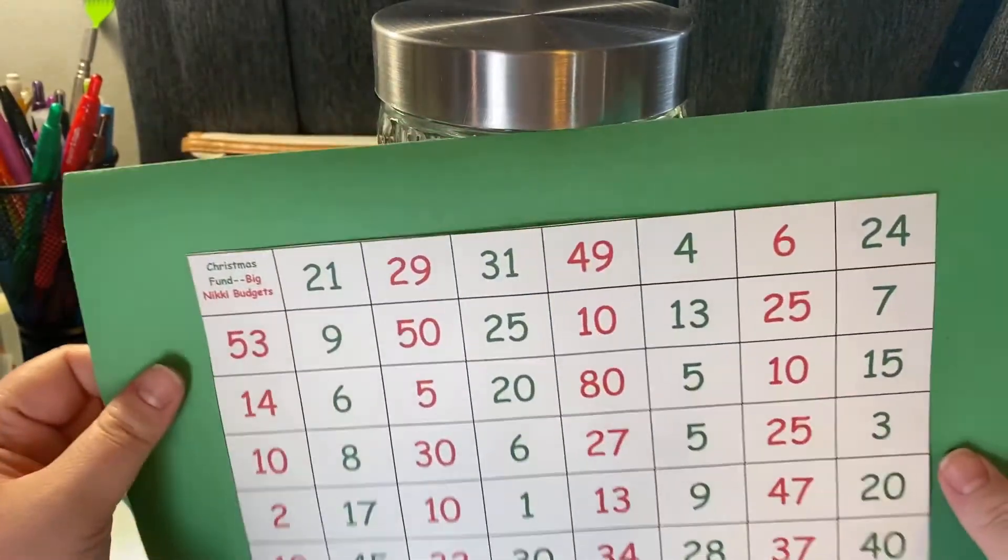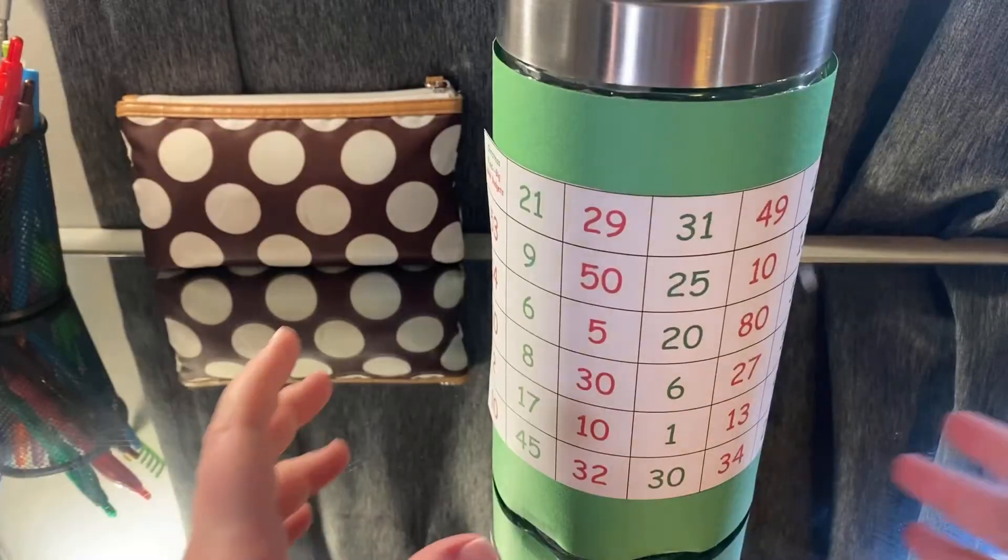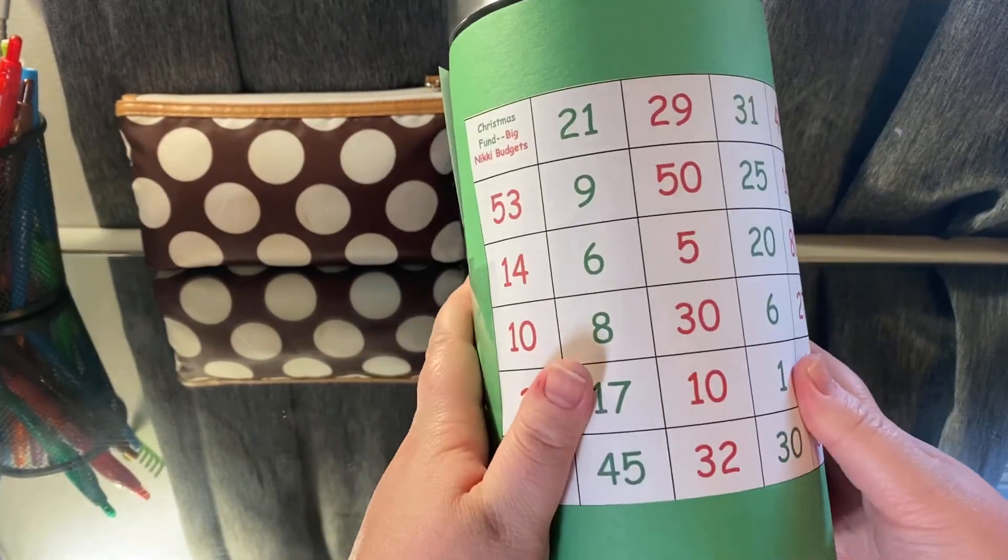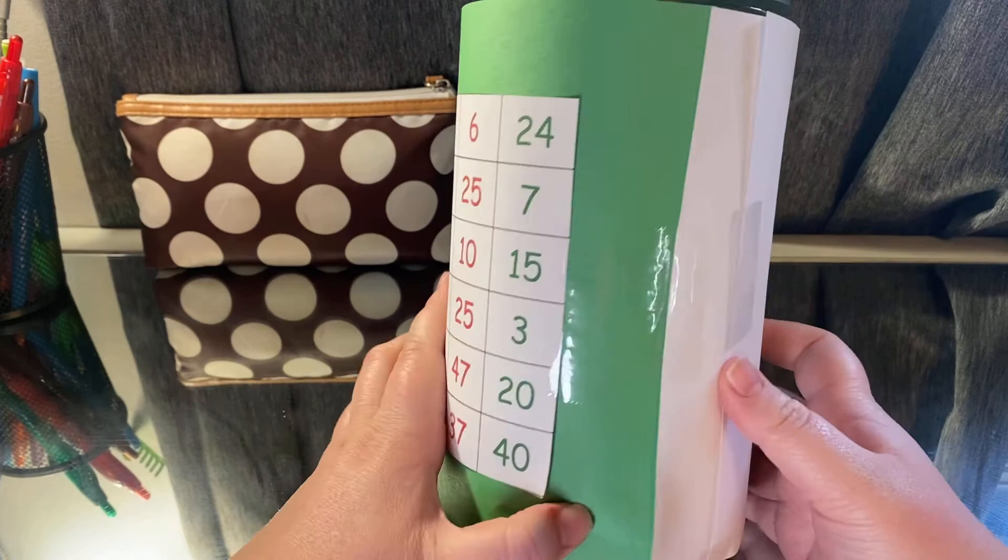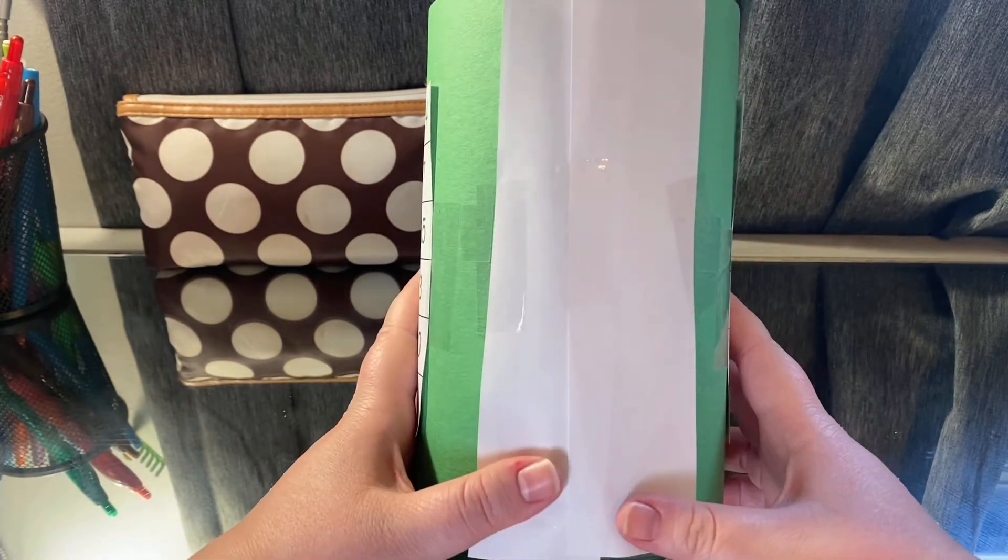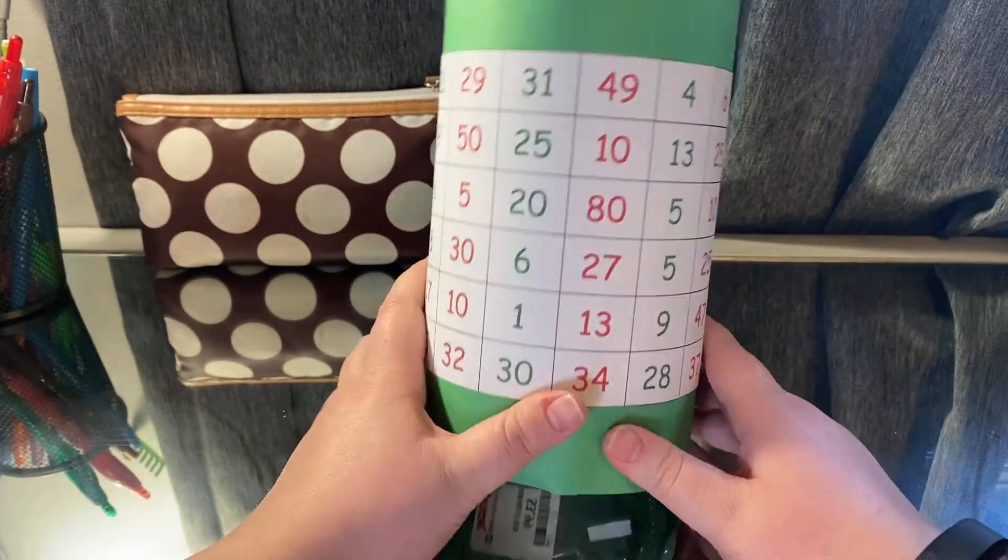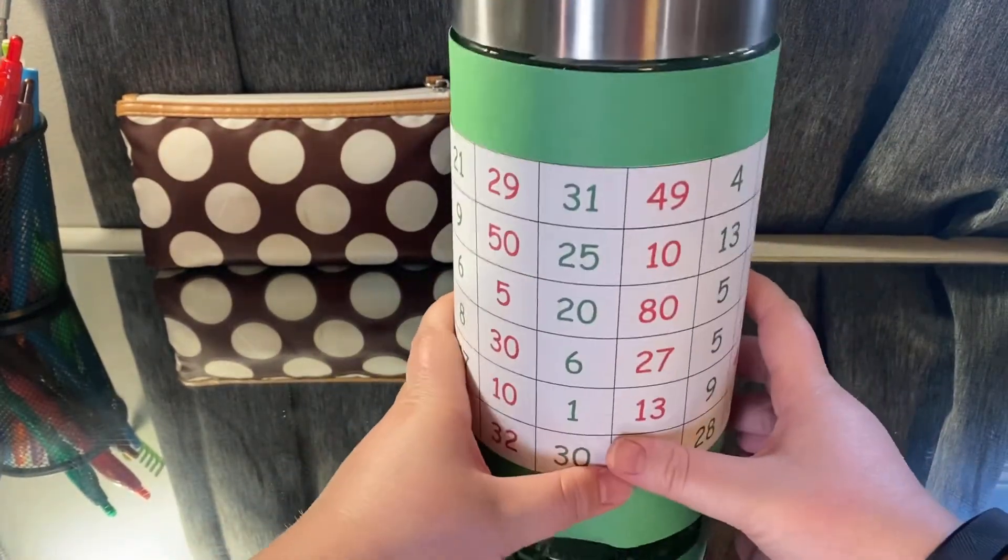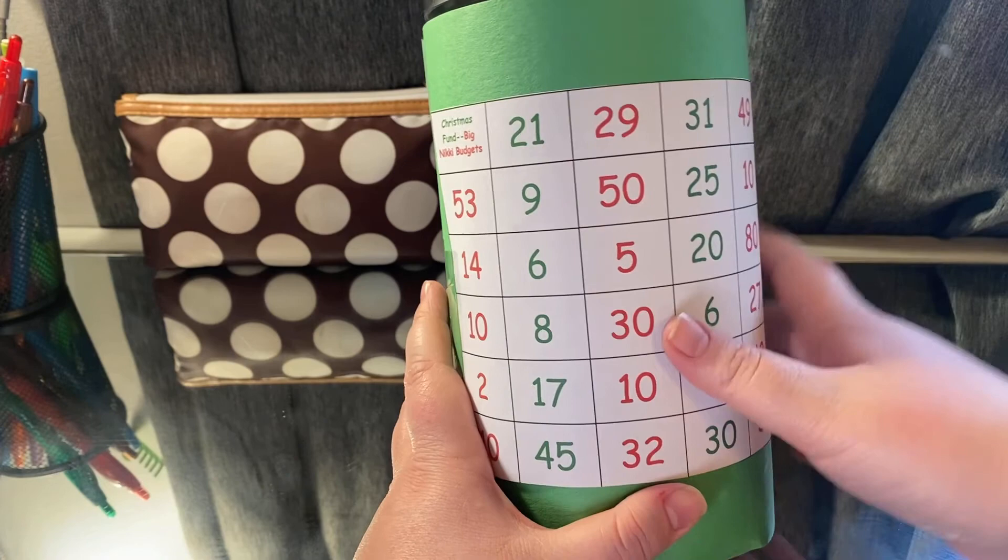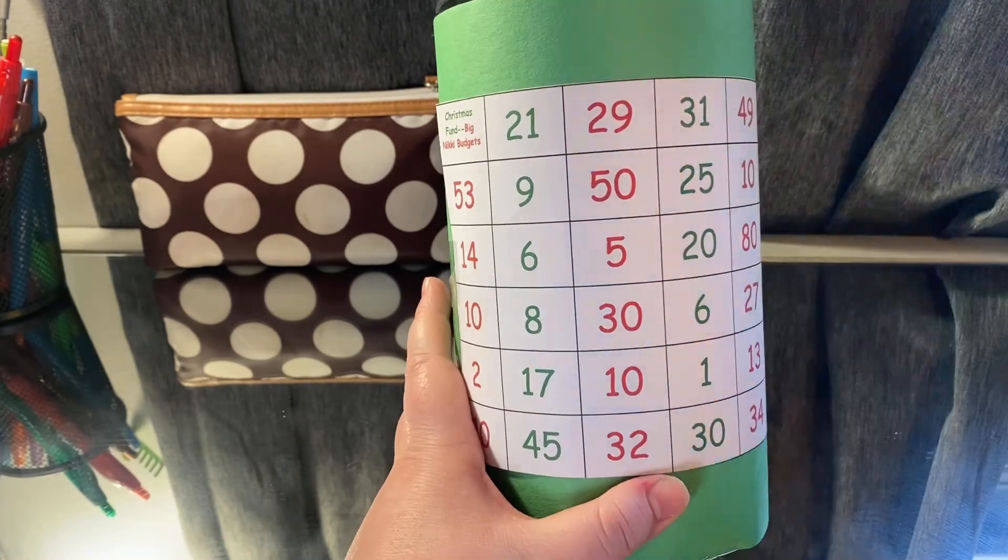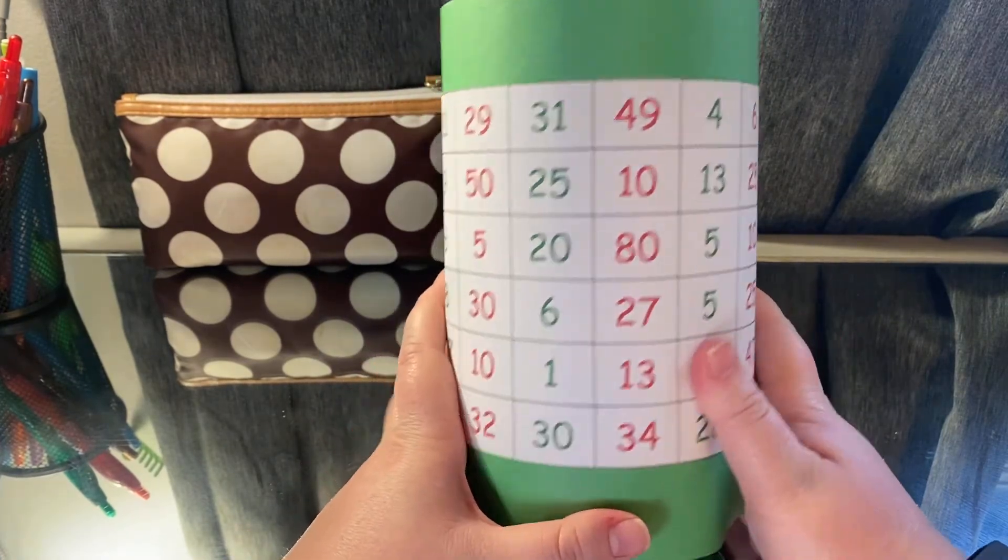Now I'm just going to wrap it around this jar and tape it, and then I'll show you what the final looks like. So here is what the final looks like. It's completely covered. And since the construction paper didn't go all the way around, I just put two extra pieces here. Just for me, I like when it's completely covered, but that's not going to be showing. It's only going to be the front that's showing here. So basically all you do is you pick an amount and then you color it in. I like to use highlighters so I can still see the numbers. And then once this entire thing is filled up, it'll be the week of Christmas and you'll also have $1,000.